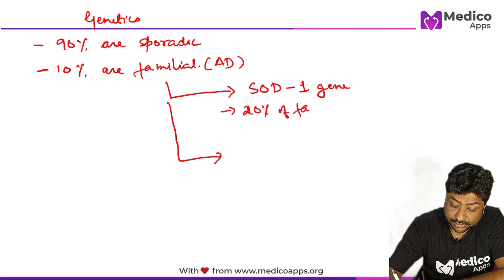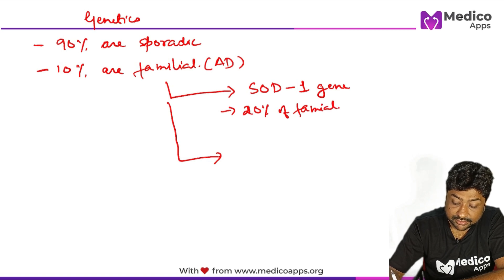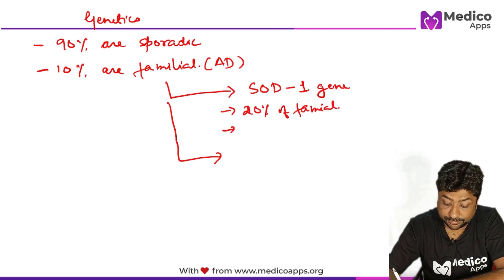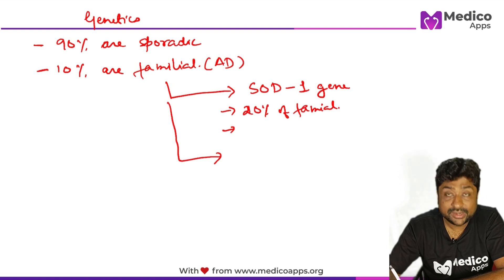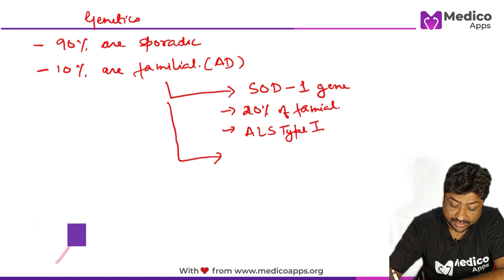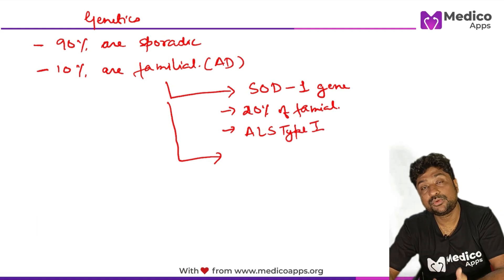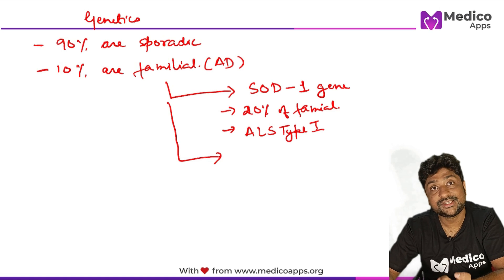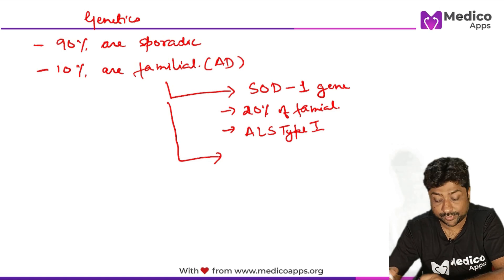Almost 20% of familial cases are due to mutation of the SOD1 gene. When the SOD1 gene mutation is present, it is also called ALS type 1. In the exam, they will ask you what is the mutation seen in ALS type 1.